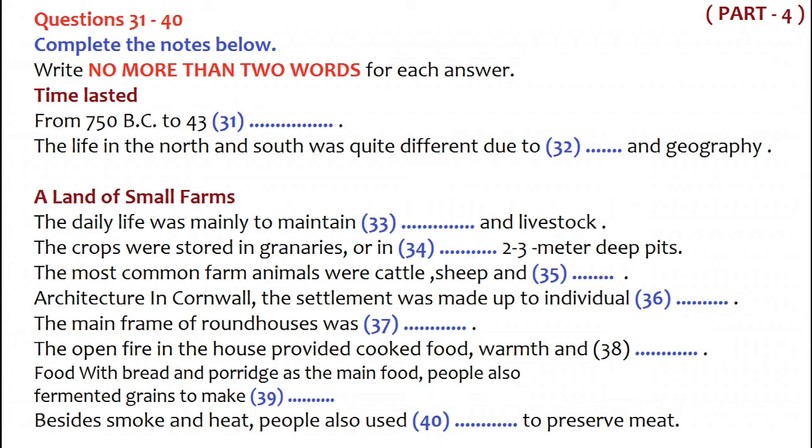Besides agriculture and stock-raising, the architecture in Iron Age is also worth mentioning. A very well-preserved settlement has been discovered at the site of Chiselster, in Cornwall. It was made up of individual houses of stone, with garden plots. In Wessex, the typical building on a settlement would have been the large round house. All of the domestic life would have occurred within this.